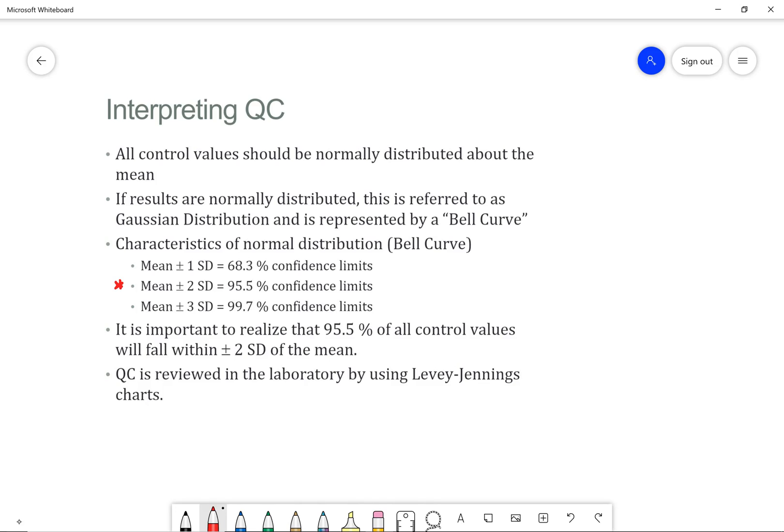And the mean plus or minus 3 SD gives us the 99.7% confidence limit. So when you're thinking of the mean, just think of an x with the bar over the top. And all that is is the average. Here it's important to know that 95.5% of all control values will fall within plus or minus 2 SD of the mean. And we use LJ charts to help us visualize this.